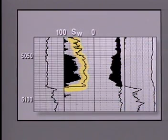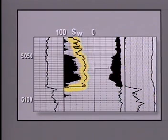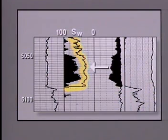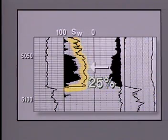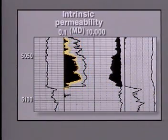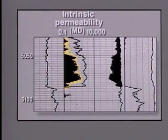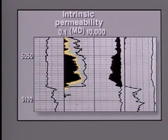In track 2, we see a plot of the water saturation, scaled from 0 to 100 percent in divisions of 20 percent. Note that at 5,064 feet, where we performed our manual calculation to arrive at a water saturation of 25 percent, the computer has determined about the same value. Also in this track, we see an estimate of permeability, which provides an indication of the formation's productivity. We recall that permeability, generally measured in millidarcies, refers to the ease with which fluids flow through the formation.